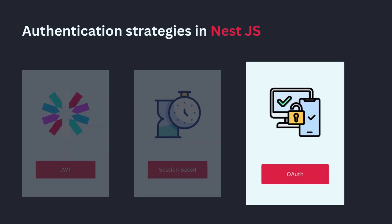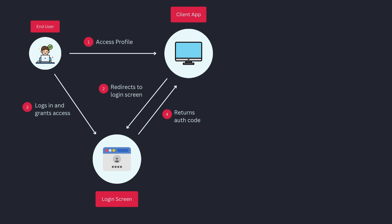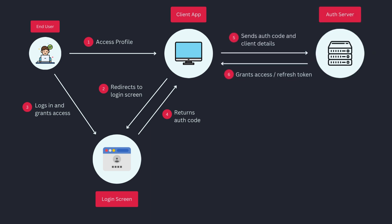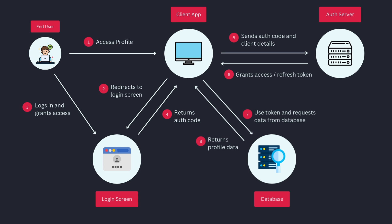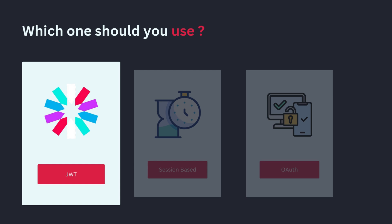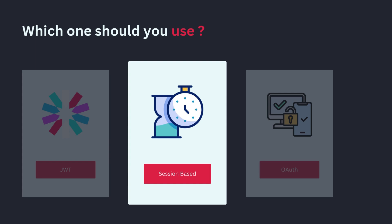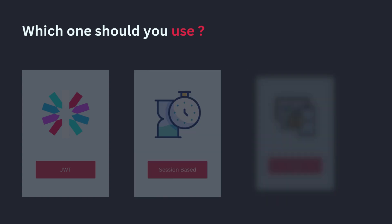OAuth allows users to log in using a third-party identity provider like Google, Facebook, or GitHub. Instead of managing credentials, your app trusts the provider to handle authentication. When a user logs in with Google, it returns an auth code to the client app after successful authentication. The client app then sends this auth code along with user details to the auth server, which grants an access token. The client app then uses this access token to request data.